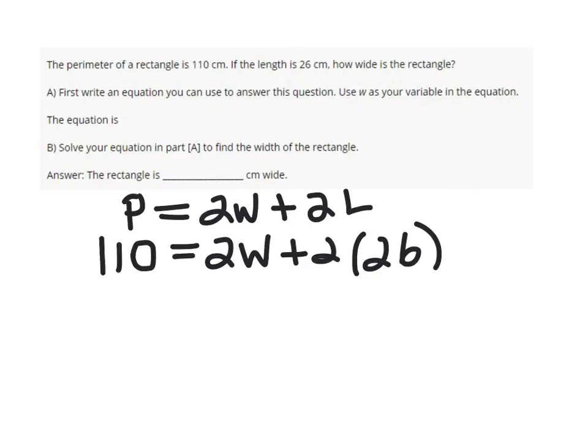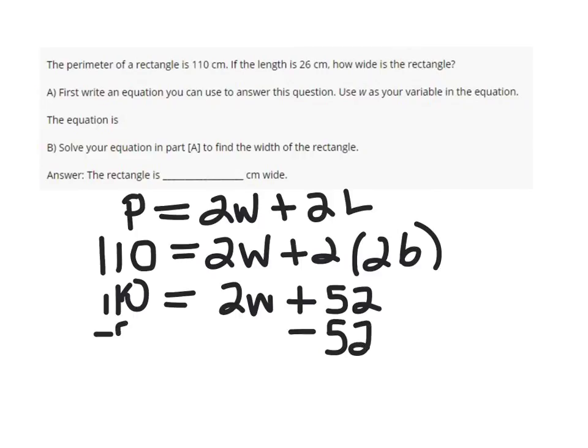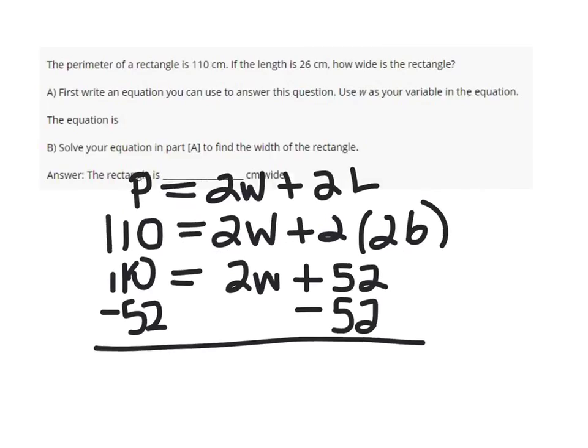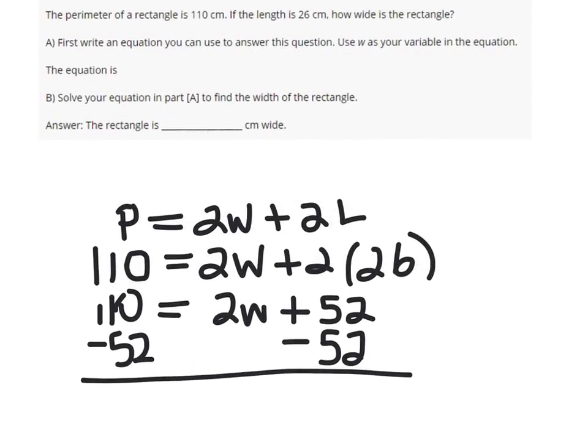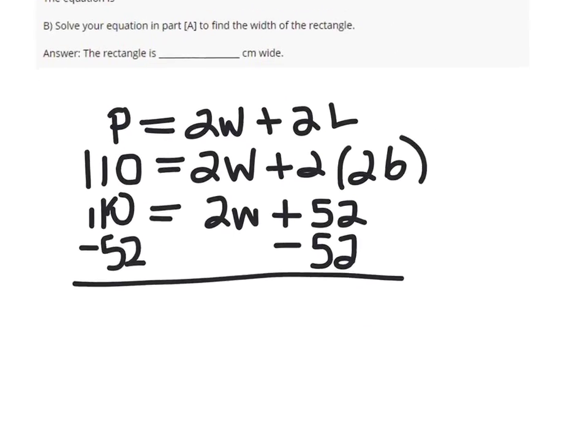And we just solve for W. So, 2 times 26 is 52. And if we subtract the 52 on both sides, there we go.